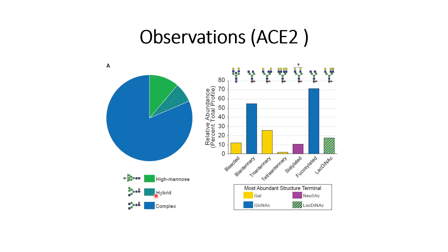These graphs make the results easier to understand. This graph is similar to what we have seen for the SARS-CoV-2 spike protein. It shows the compositions of glycans present at the six ACE2 sites. The majority of them are complex, some are high-mannose structures, and the rest are hybrid.